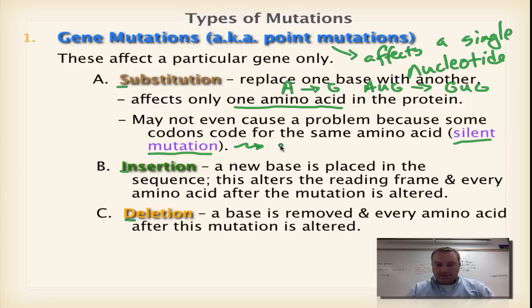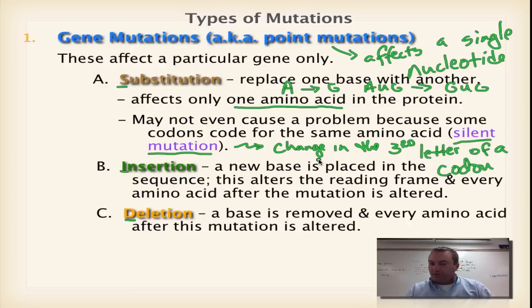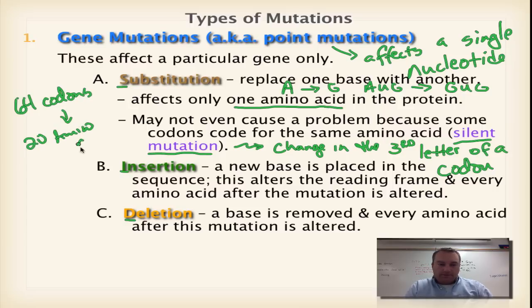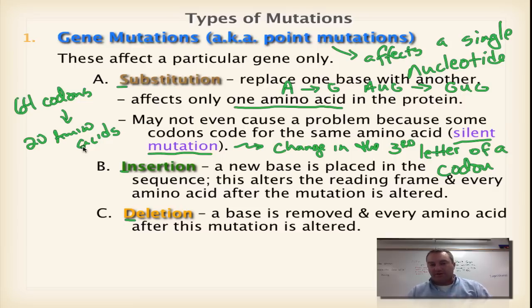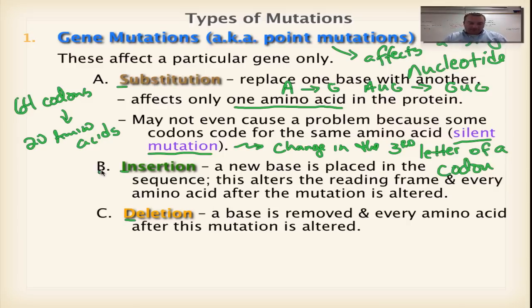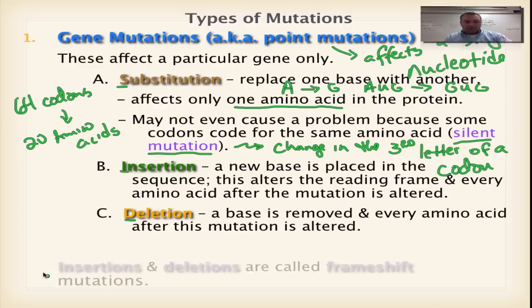Silent mutations are usually caused by a change in the third letter of a codon. The reason the third letter isn't as important as the first two is because there are 64 codons but only 20 amino acids. So some codons code for the same amino acid — as we saw on the code wheel, four codons can code for the exact same amino acid. If you change the third letter, it didn't matter; it still codes for that particular amino acid. Insertions and deletions, however, cause what is known as a frame shift mutation, because they alter the reading frame.